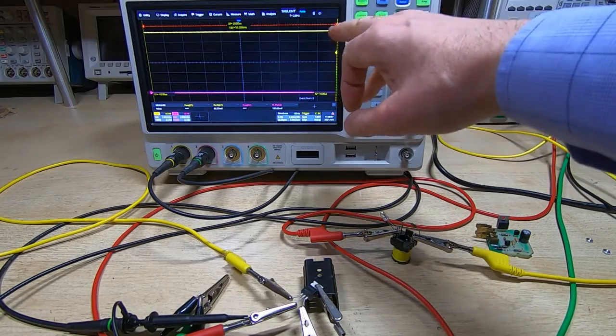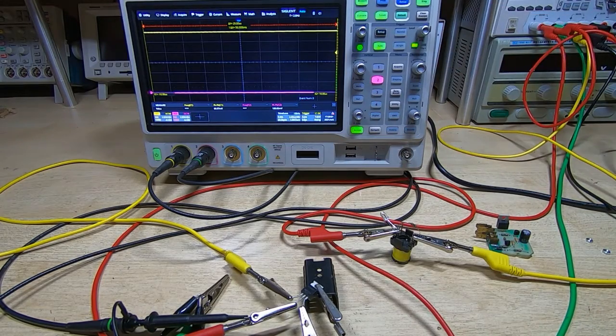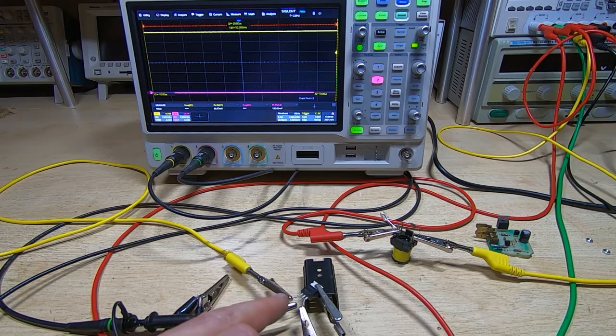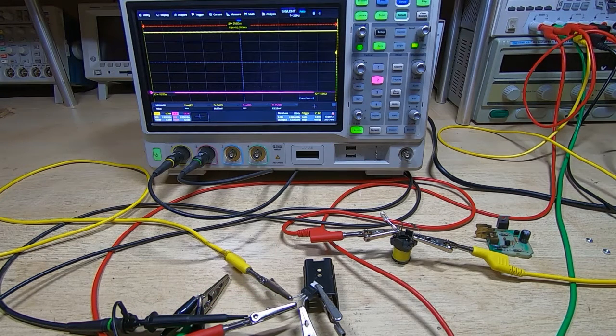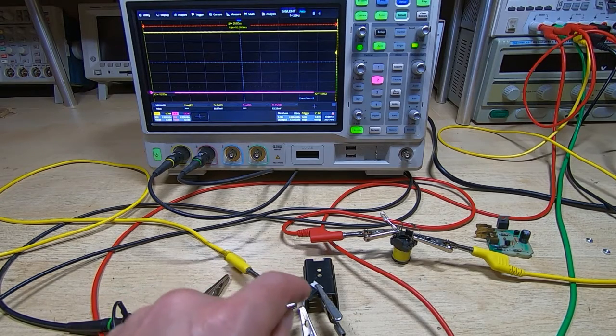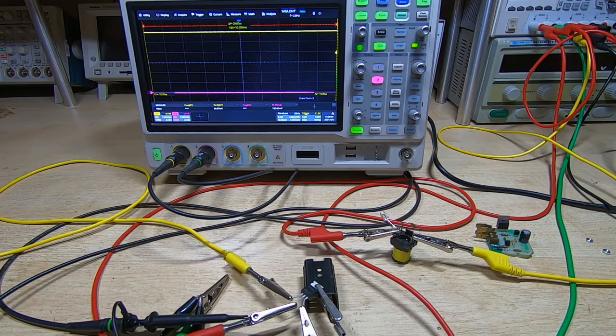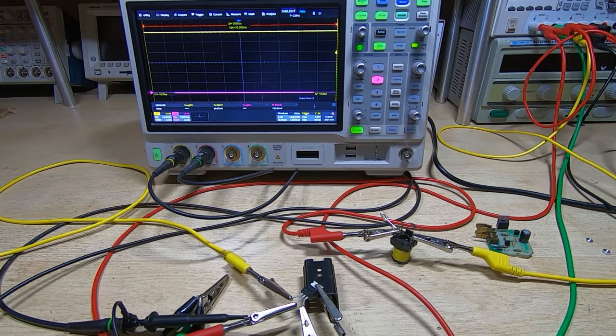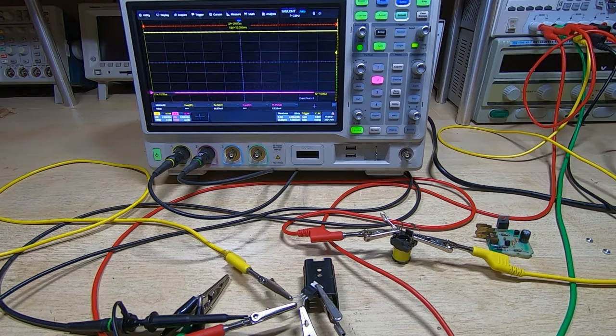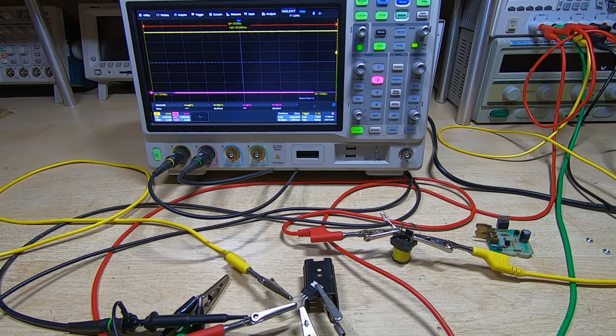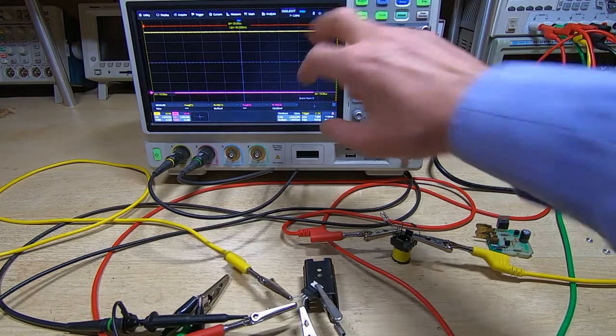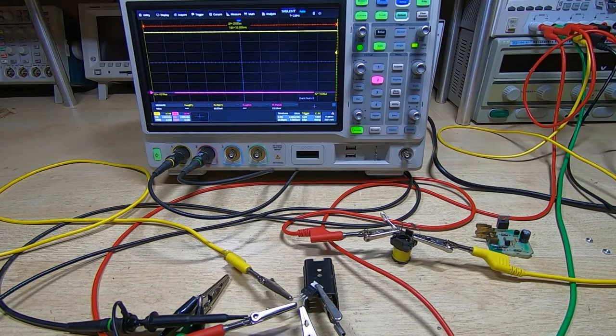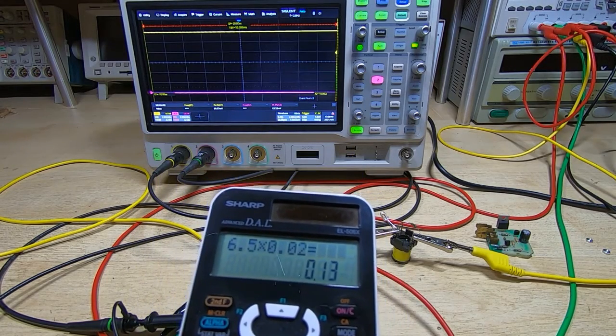We'll look into why that is the case. This obviously shouldn't be happening. If we look on the scope, the two channels - the yellow channel is the input voltage coming directly from the power supply, and the purple trace is the output voltage from the MOSFET. If this is working properly with a resistance of 0.02 ohms and 6.5 amps going through it, then we can work out the voltage drop. 6.5 amps times 0.02 ohms, we should get about 0.13 volts. So these two traces should be 0.13 volts separated.